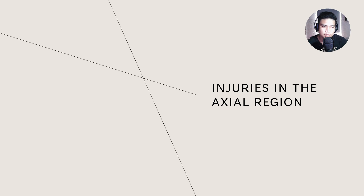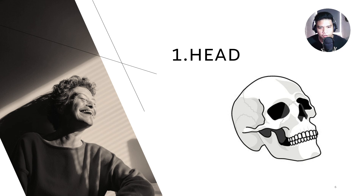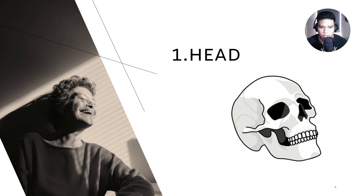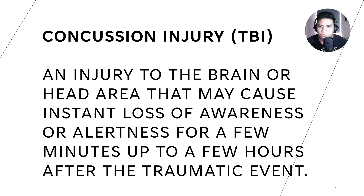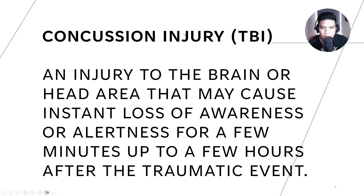Now let me present the injuries that can be found in the different parts of the axial region. Let's start first with the head — the most important part of our body. One injury found in the upper portion of our body is the concussion injury, also known as traumatic brain injury, or TBI.